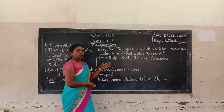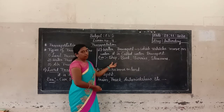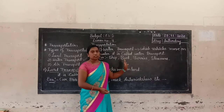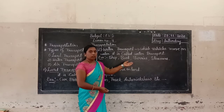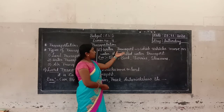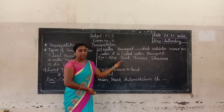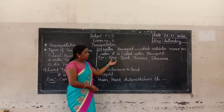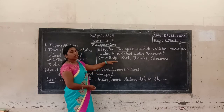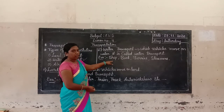To transport our goods we use ships. Boat, ferries, steamers, ship — these are found in seas and oceans. Boats are found in rivers. This is water transportation. Examples of water transport: ship, boat, ferries, steamers. This is a very costly vehicle for transporting goods.